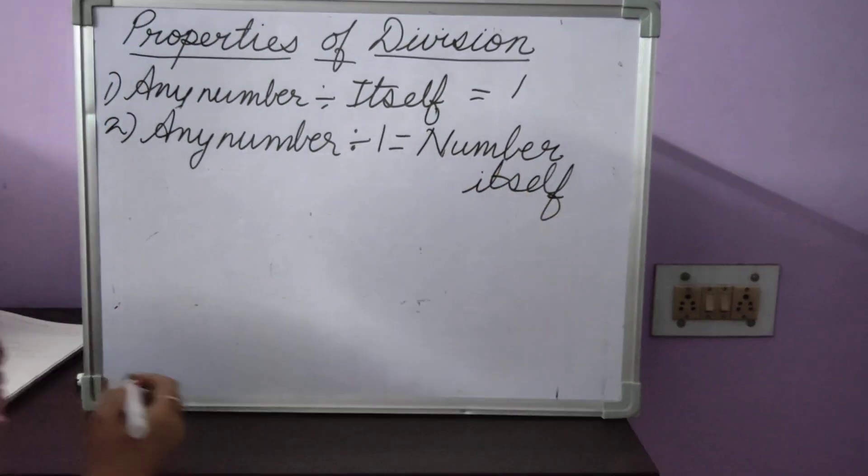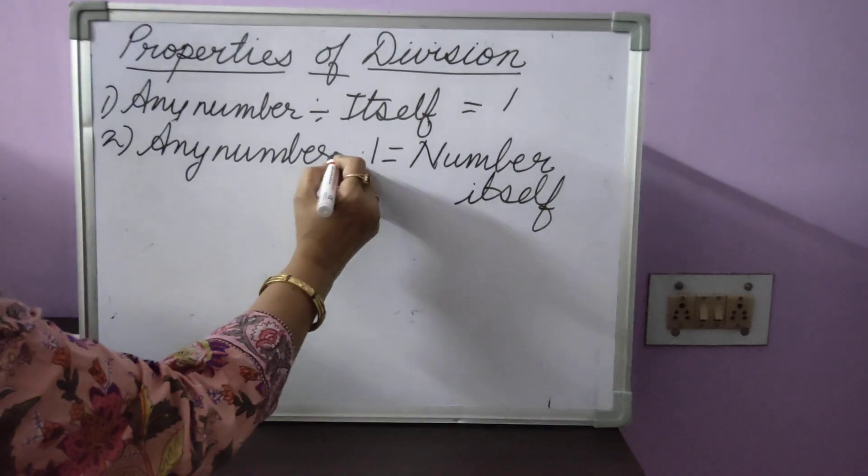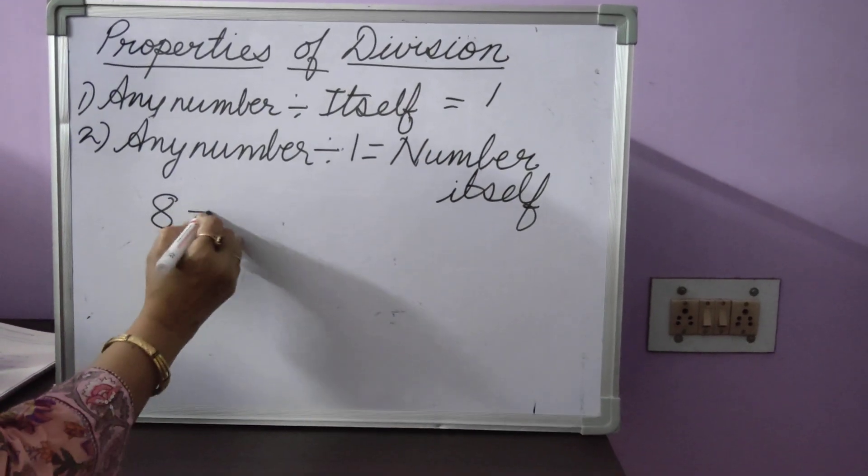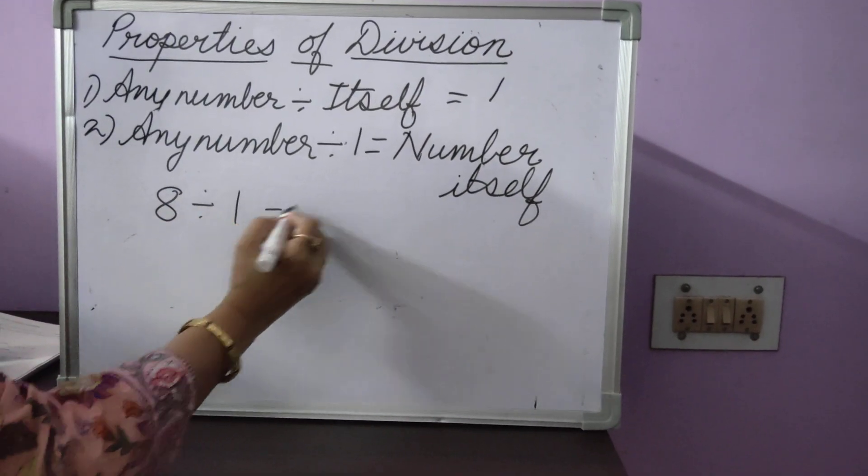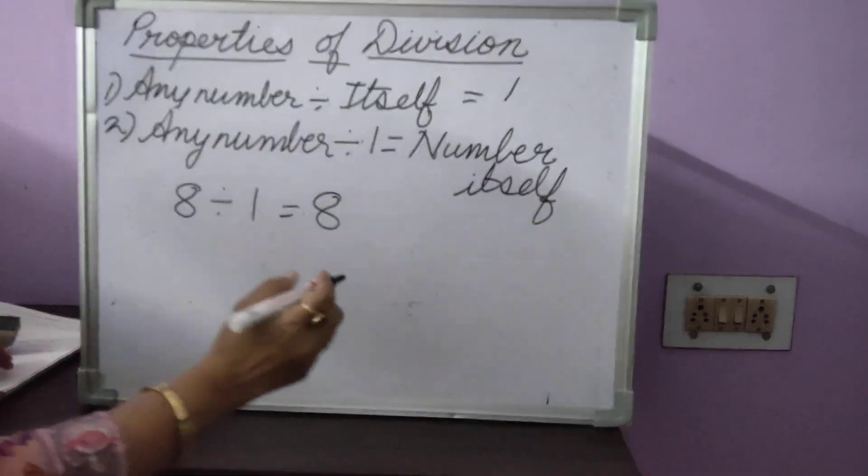Now, you take any number. Let me put this division sign properly. You take any number. You take the number 8 divided by 1. What will you get? The same answer. The number itself, 8.